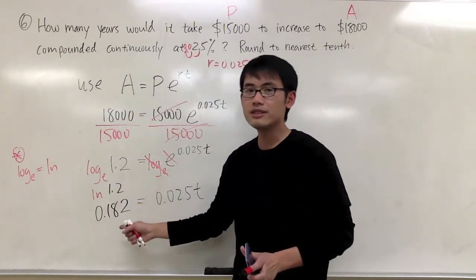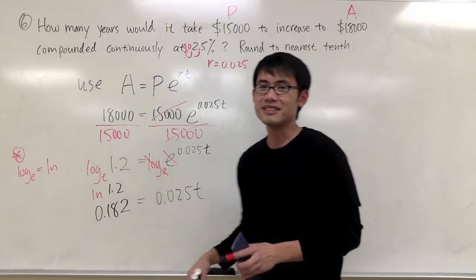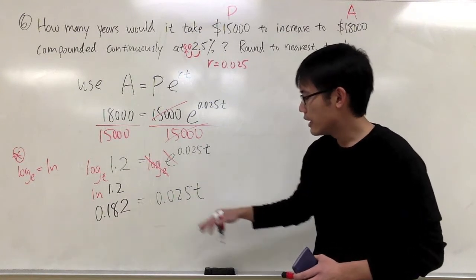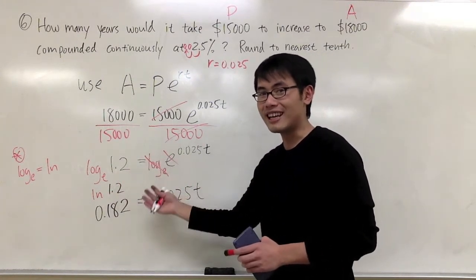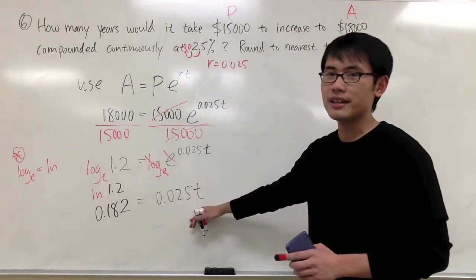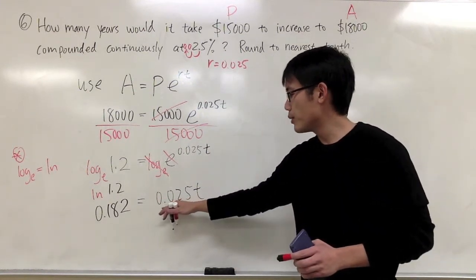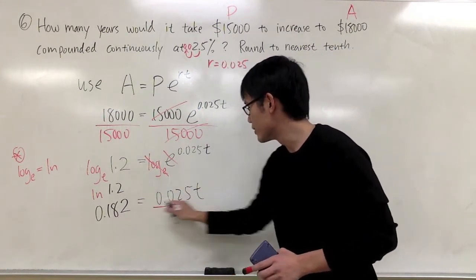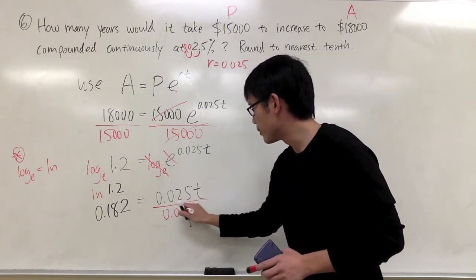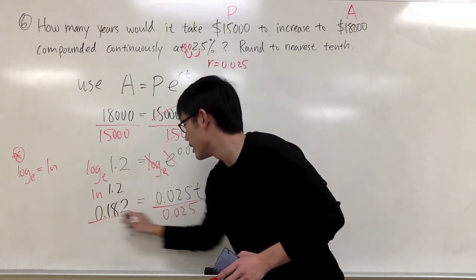When you are doing the calculations, just write down three decimal places along the way. And once we take log base e on both sides, or LN on both sides, this is just a regular equation. 0.025 times t is equal to that. I can just divide by 0.025 on both sides.